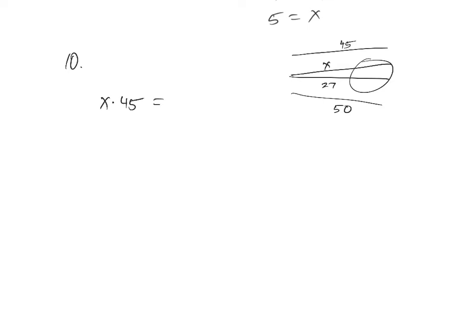x times 45, and that's equal to the outside segment, 27, times the other full segment, 50. So the outside little piece times the whole segment. That is how you set those up. And you've got to memorize each of these theorems. So this is 45x. And let me grab my calculator, and we'll do 27 times 50. And that is 1350. And we divide by 45. And x is equal to 30. And we're only solving for x on these at the moment.